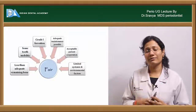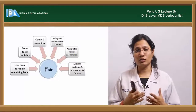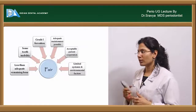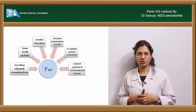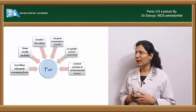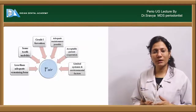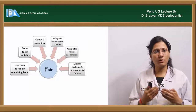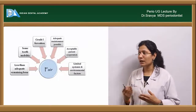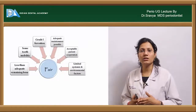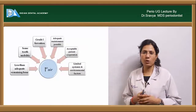For a fair prognosis, the factors include probably grade one furcation involvement and some amount of tooth mobility. If the patient is having some amount of tooth mobility, grade one furcation involvement, and adequate maintenance, along with acceptable patient cooperation — the patient will listen to you.